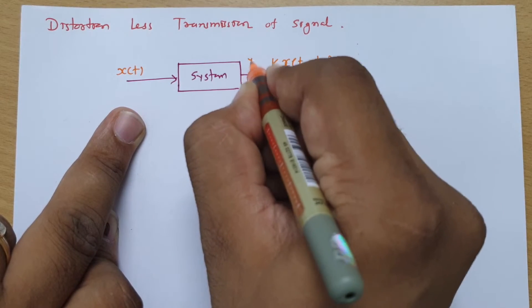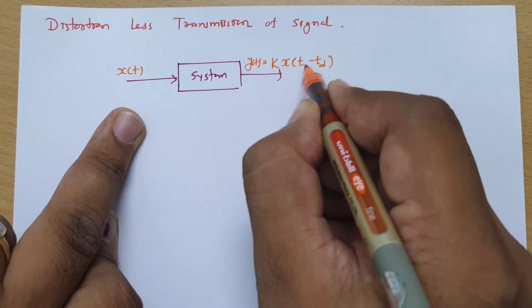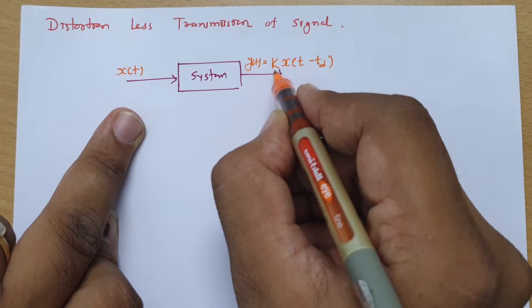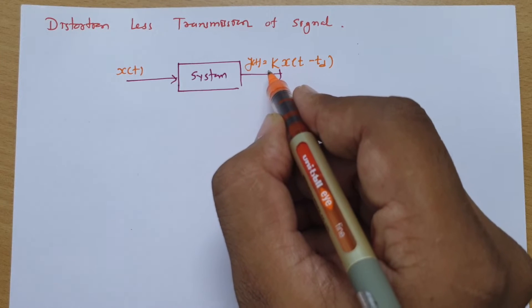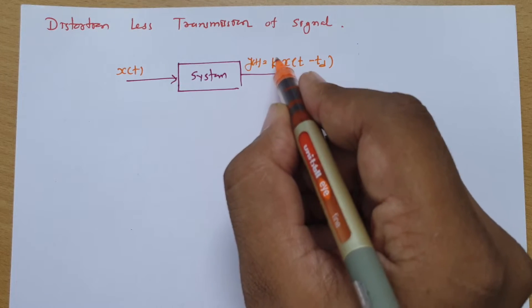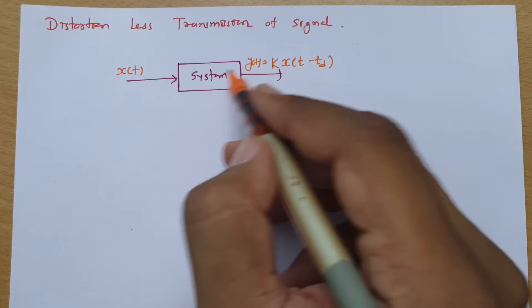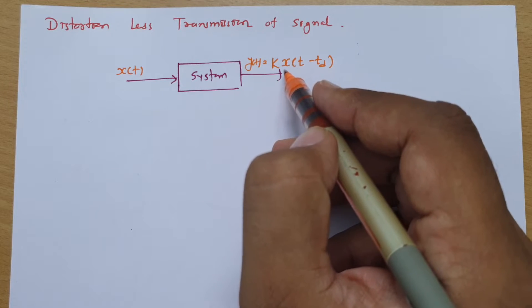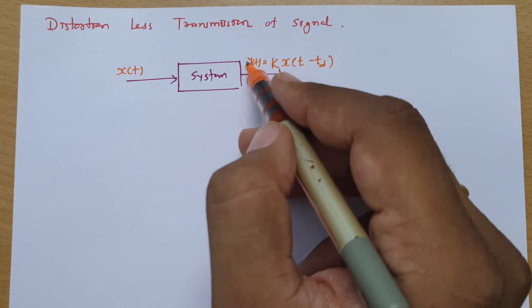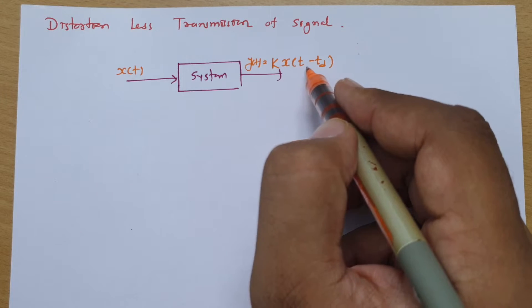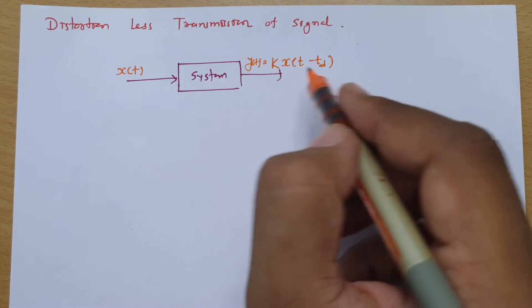So at the output side, if my signal is y(t), then y(t) should be k multiplied by x(t - td), where k is the attenuation or amplification constant. If the amplitude is increasing, it is amplification; if decreasing, it is attenuation. The information in the frequency domain will not change — it is only delayed by some time period. This is distortion-less transmission.